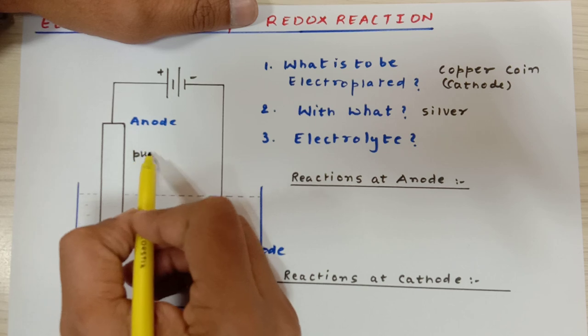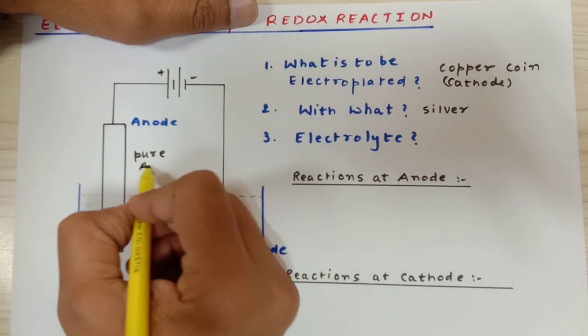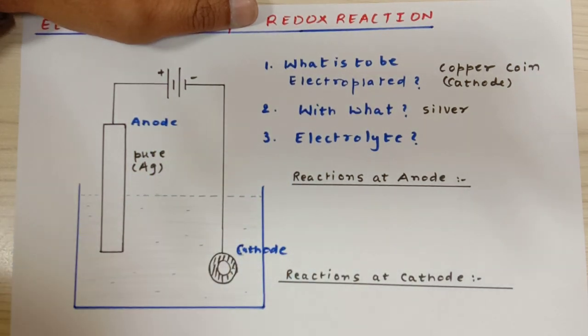What do you want to electroplate? You need to connect it with the negative terminal of the battery and make it as a cathode. And I decide to electroplate this with silver. I am going to take a pure rod of silver and I am going to make it as anode. This is a pure silver rod.